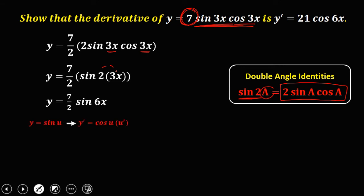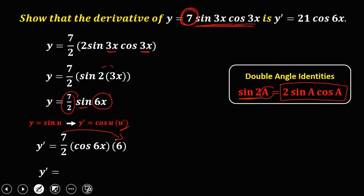Since the derivative of sine is cosine u times the derivative of u, bring down the coefficient 7 over 2, then take the derivative of sine — that's cosine u — times the derivative of 6x, which is 6. Simplify by multiplying 7 over 2 by 6: 6 divided by 2 is 3, and 3 times 7 is 21. So y prime equals 21 cosine 6x.